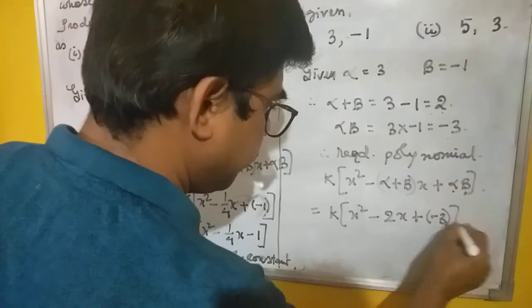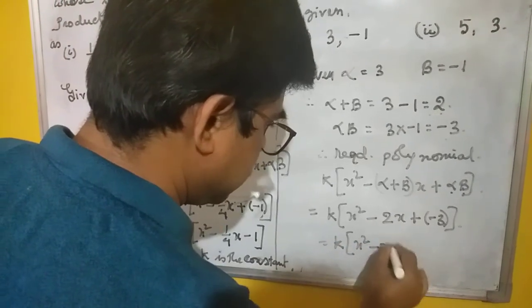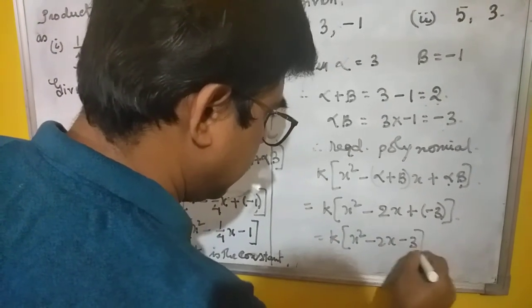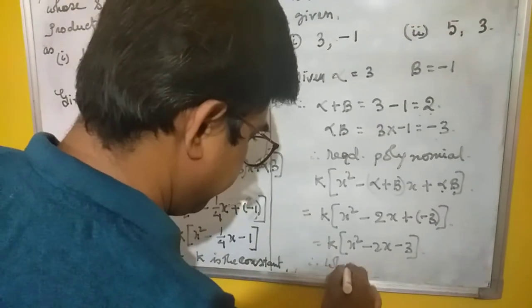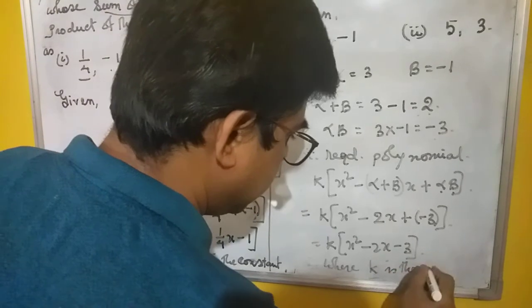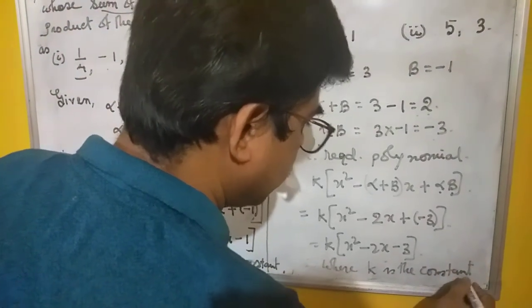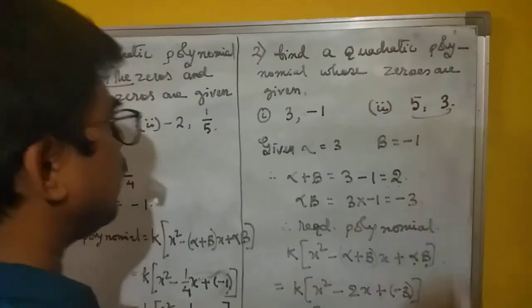So minus 3. So you write k x square minus 2x minus 3 and where k is the constant. Now you can do the second one also like that.